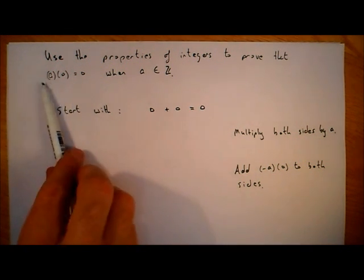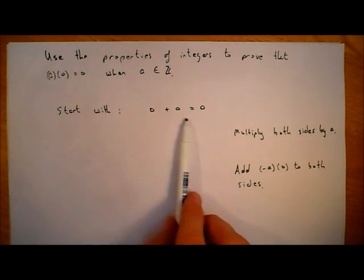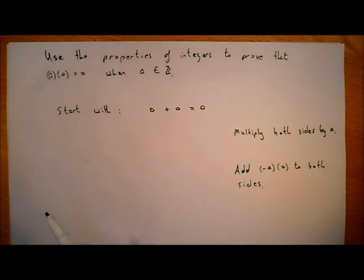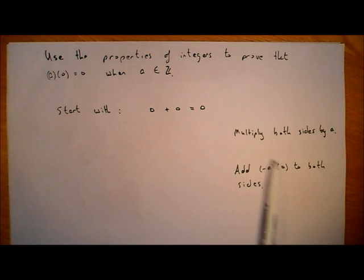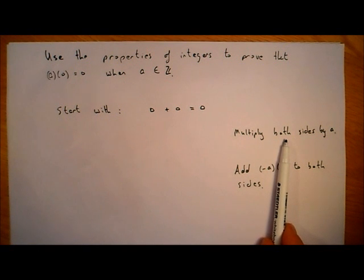We're going to prove that a times zero is equal to zero, where a is an integer. We'll start with the equation zero plus zero equals zero. I've written down the steps we're going to use, so if you want to pause the video and try to do this yourself, that would be a good idea — then turn it back on and see where we're going.